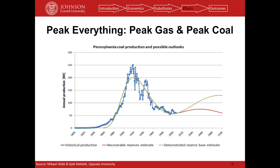Another effect of peak oil: just like oil, other hydrocarbon fuels — gas and coal — are also finite and non-renewable. They'll all reach a peak. When you reach peak oil and start substituting these other resources for oil, it accelerates their peaks, bringing them forward. Estimates are that a peak in gas could occur 10 to 15 years after peak oil, and a peak in coal about 20 to 25 years after that.